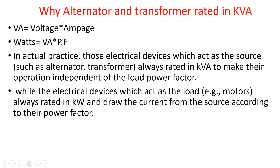The next topic is why generators and transformers are rated in KVA. The losses of a transformer depend on voltage and current. Voltage-related loss is the iron loss — a constant loss from eddy currents, hysteresis loss, and core loss. Current-related loss is the copper loss, which is I²R loss. Since transformer losses depend on both voltage and current (KVA), they are rated in KVA, not in KW.